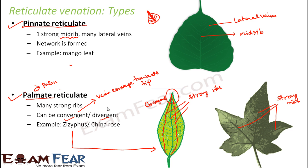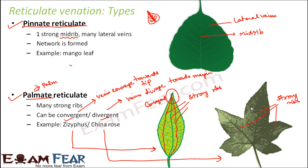In the divergent type of palmate reticulate, the main veins diverge towards the margin — away from the tip and towards the boundary of the leaf. Looking at a china rose leaf, the strong ribs are not meeting each other; they go away from each other towards the margin. So this is divergent palmate reticulate, while ziziphus is an example of convergent palmate reticulate.